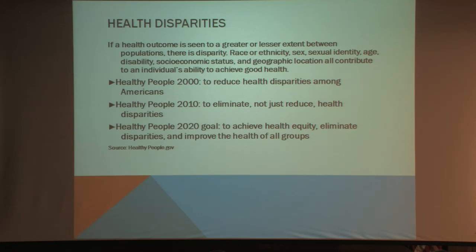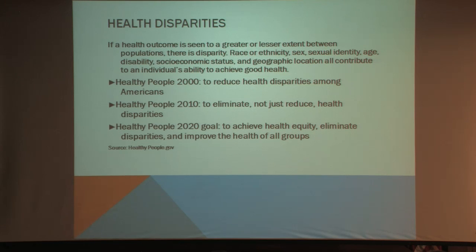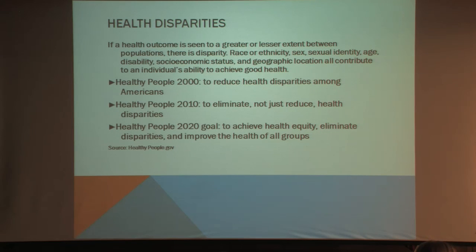So now we're looking at Healthy People 2020, and our goal this time is to achieve health equity and eliminate disparities and improve the health of all groups. Before it was reducing health disparities among Americans, and we've never really identified who the Americans are. Now people are saying let's disaggregate all these data, because it tells the story better if we pull groups of people out — the Native Hawaiians, American Indians, Alaskan Natives — and take a look at those disparity issues.